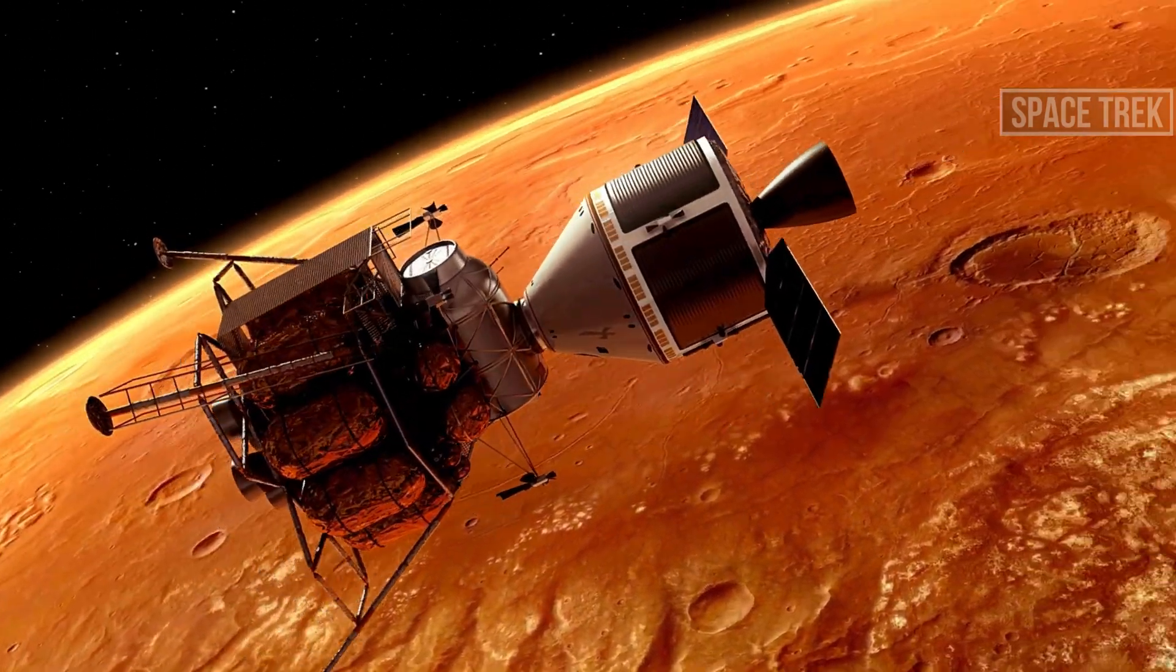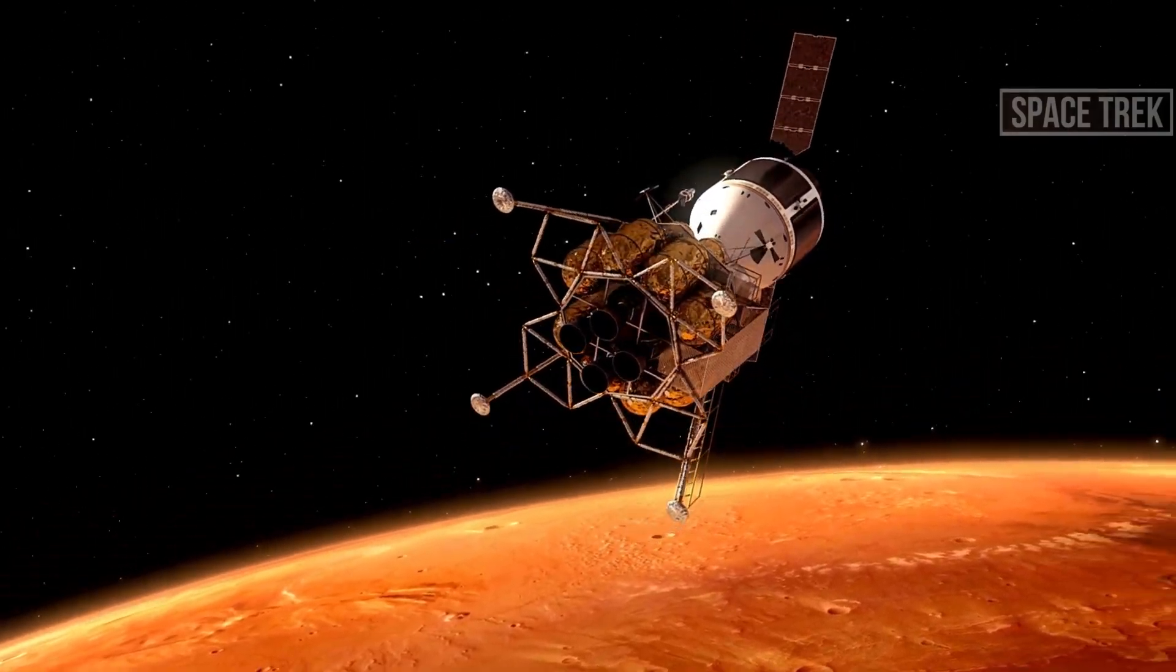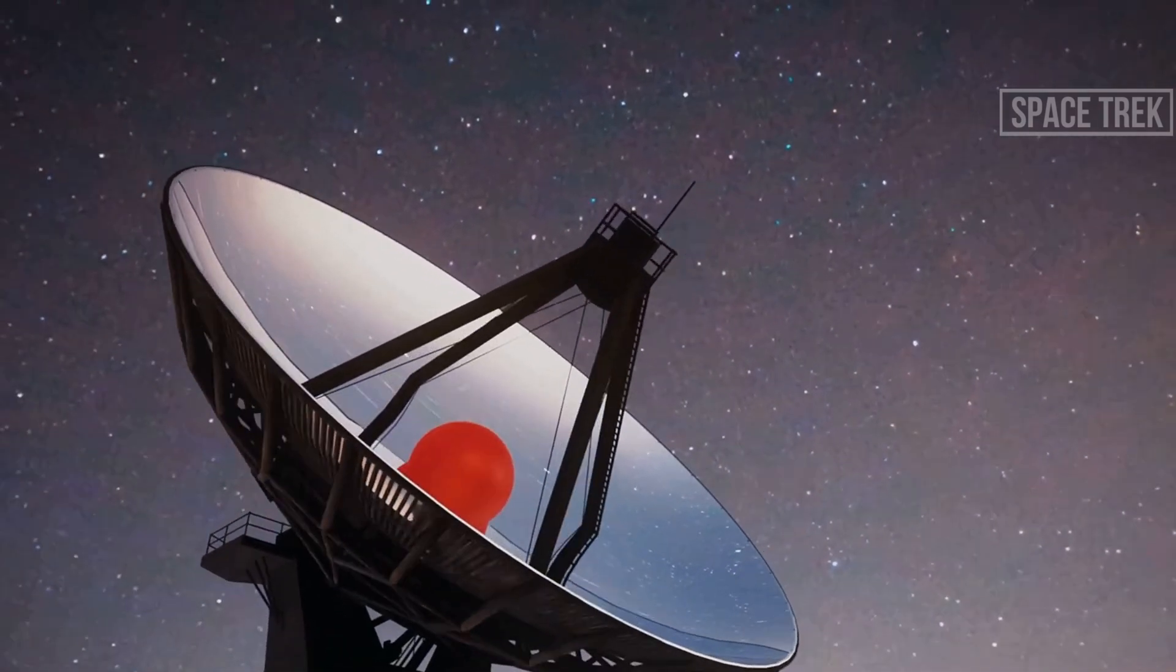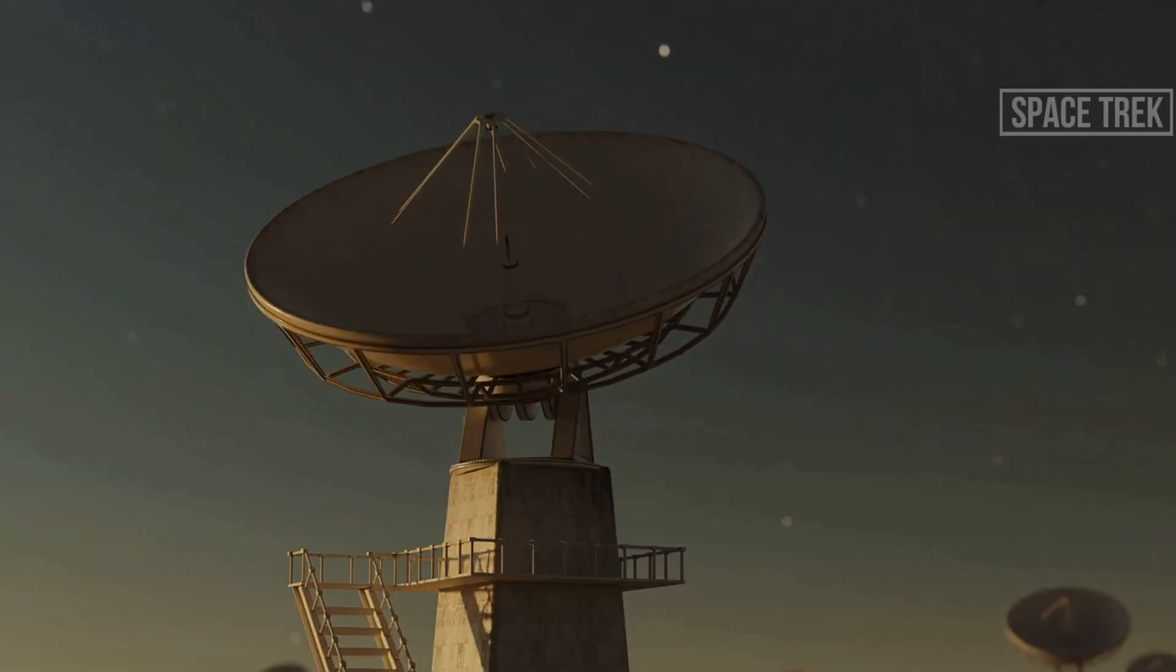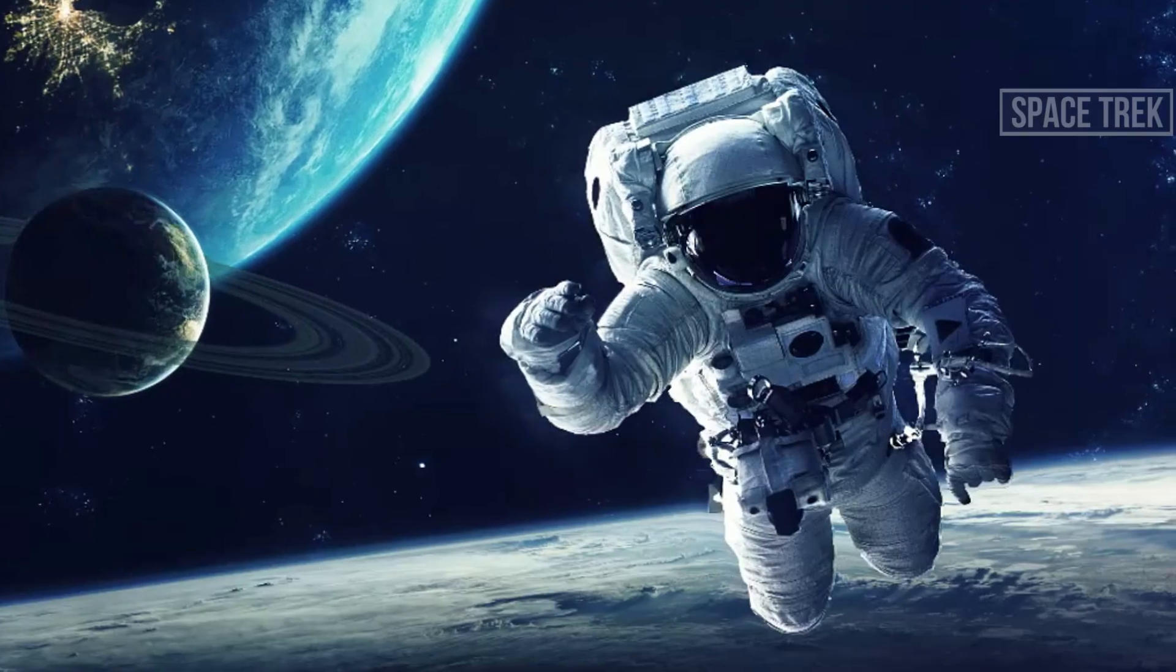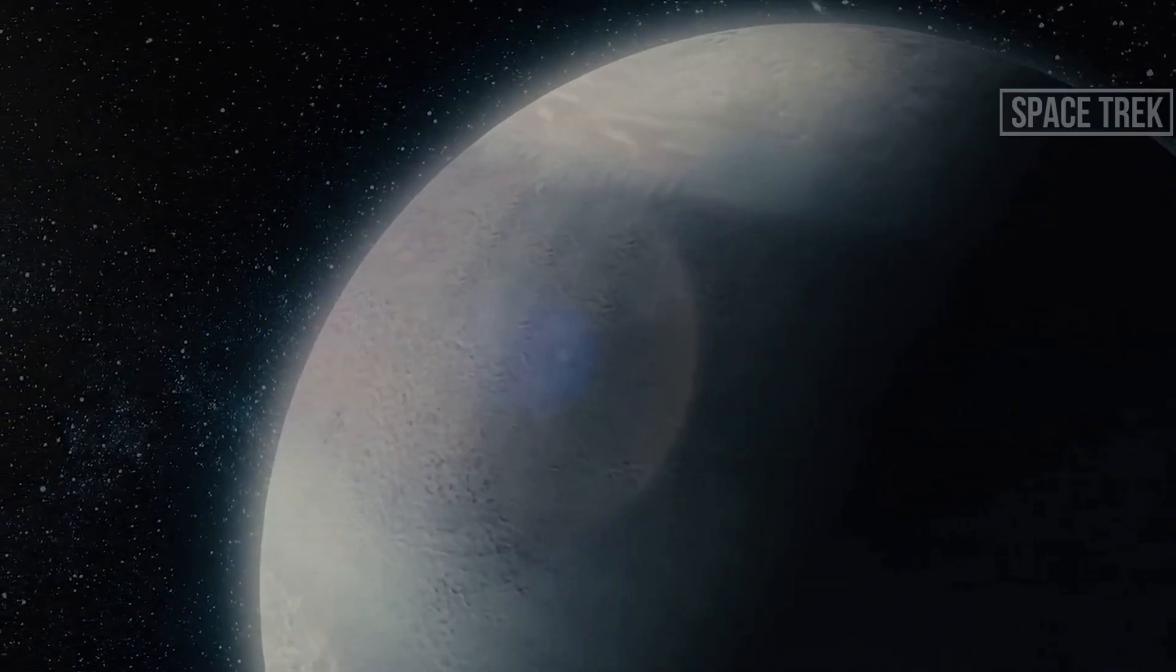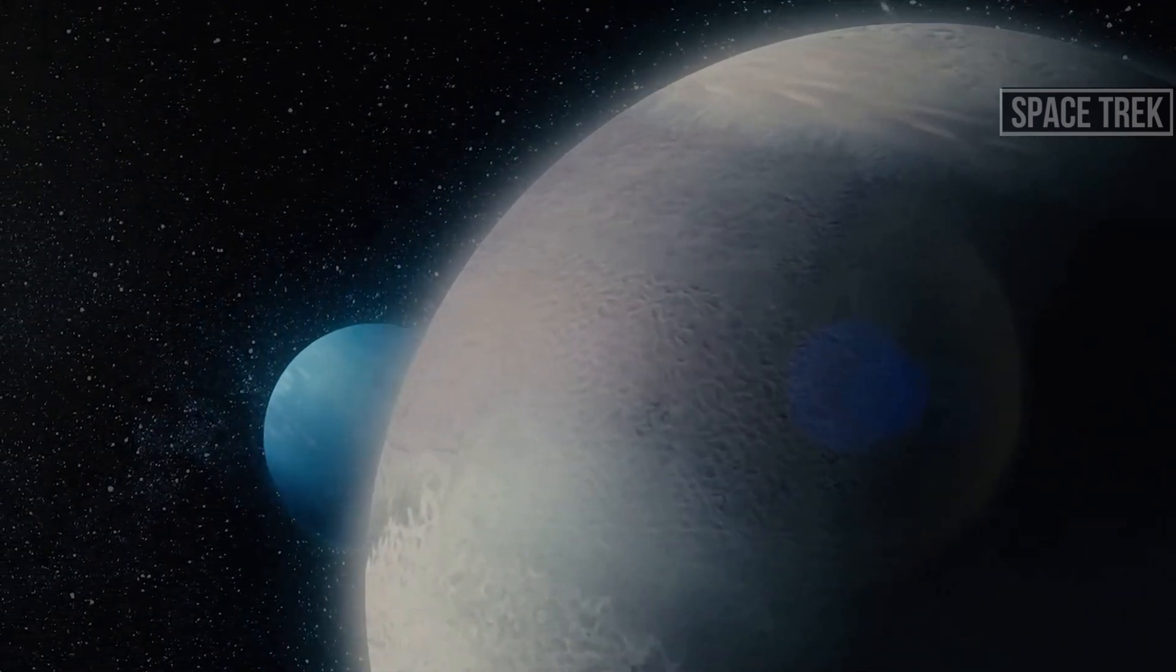Enter TESS, the Transiting Exoplanet Survey Satellite, launched in 2018. TESS took the baton from Kepler and is now scouring the cosmos, looking for planets around the closest, brightest stars in our sky. Imagine an exoplanet with the right conditions for life. A place where water exists, where the air is breathable, where the sunsets are breathtaking. It's a tantalizing thought, isn't it? And it's not just wishful thinking. The data from these missions suggest that there are more planets than stars in our galaxy. The discovery of these exoplanets opens up a world of possibilities for the existence of life outside our solar system.